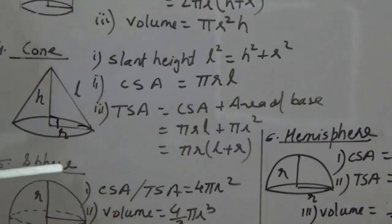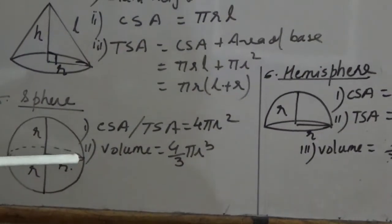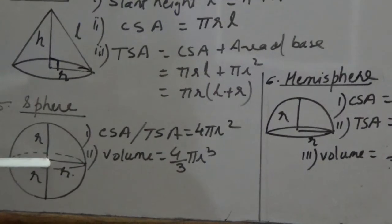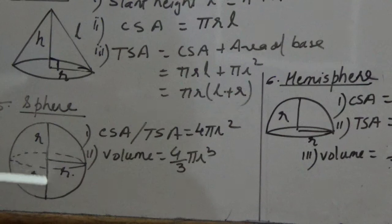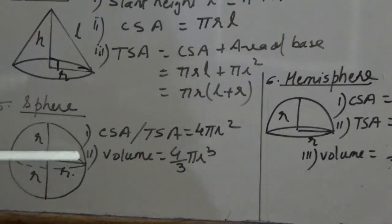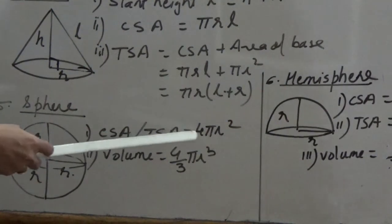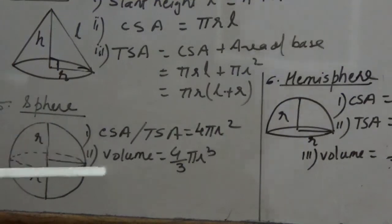Next is the sphere. In a sphere, the height is equal to the radius — there is no separate height. So the curved surface area and the total surface area of a sphere are the same: 4πR². The volume of a sphere is (4/3)πR³.